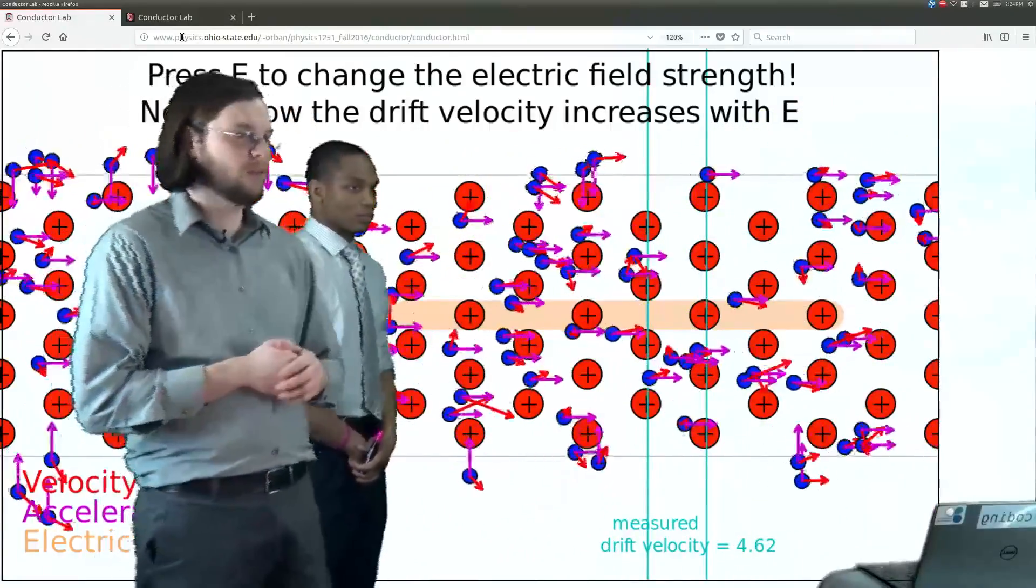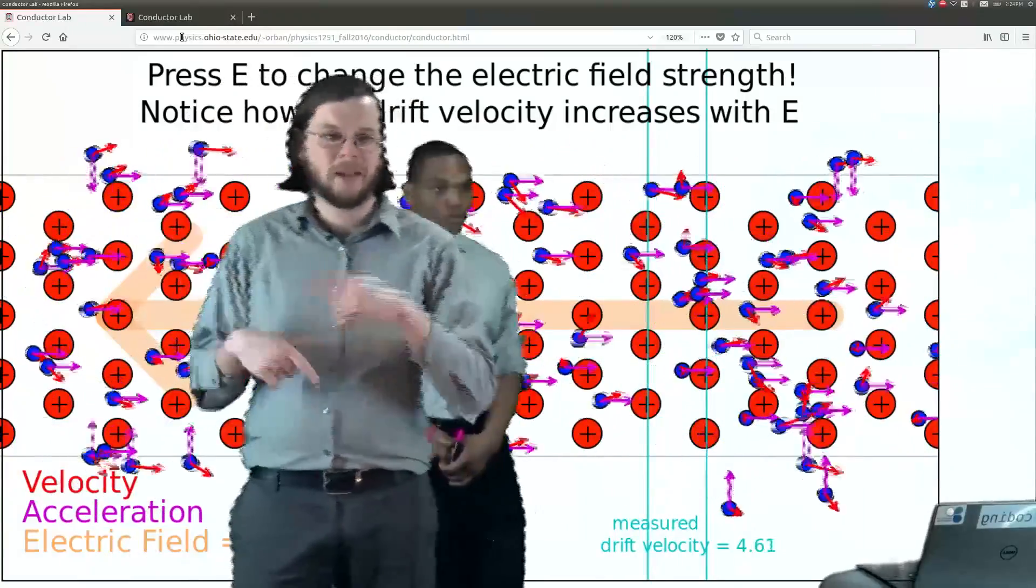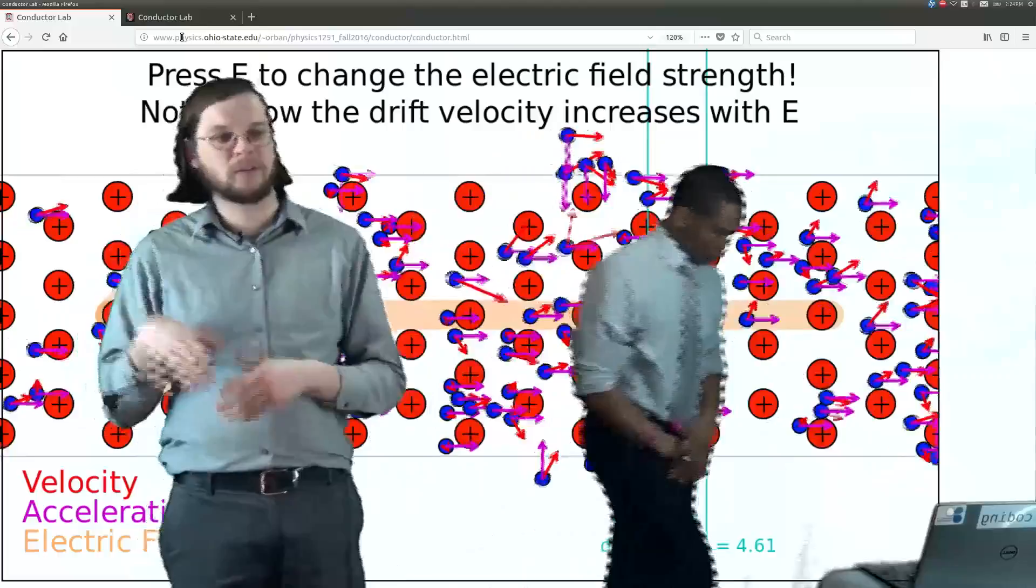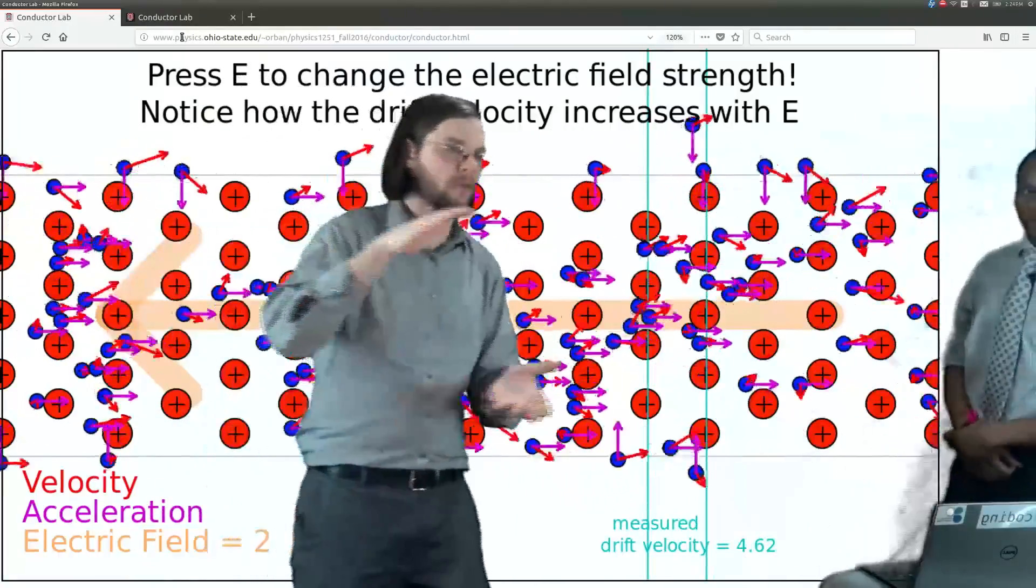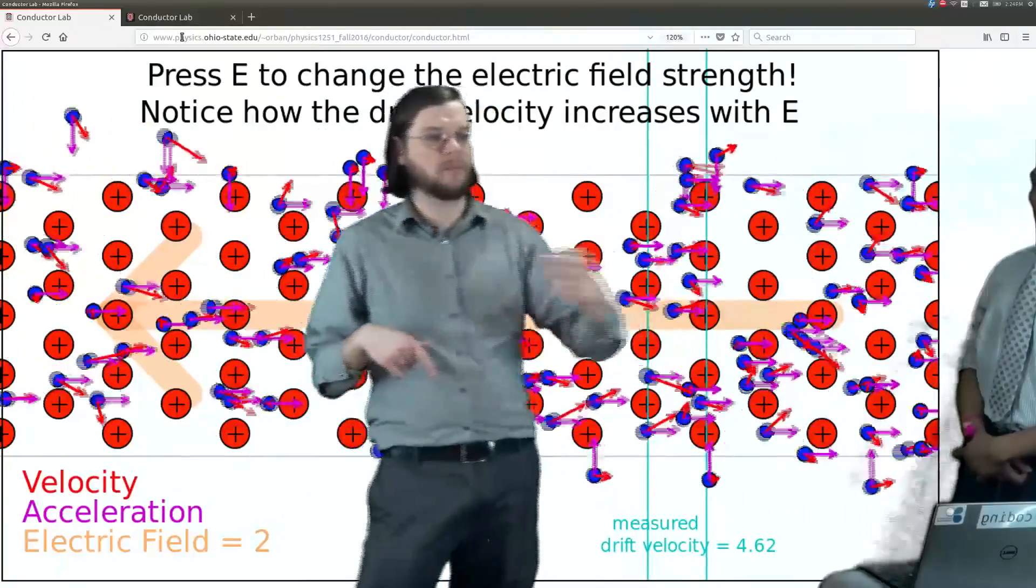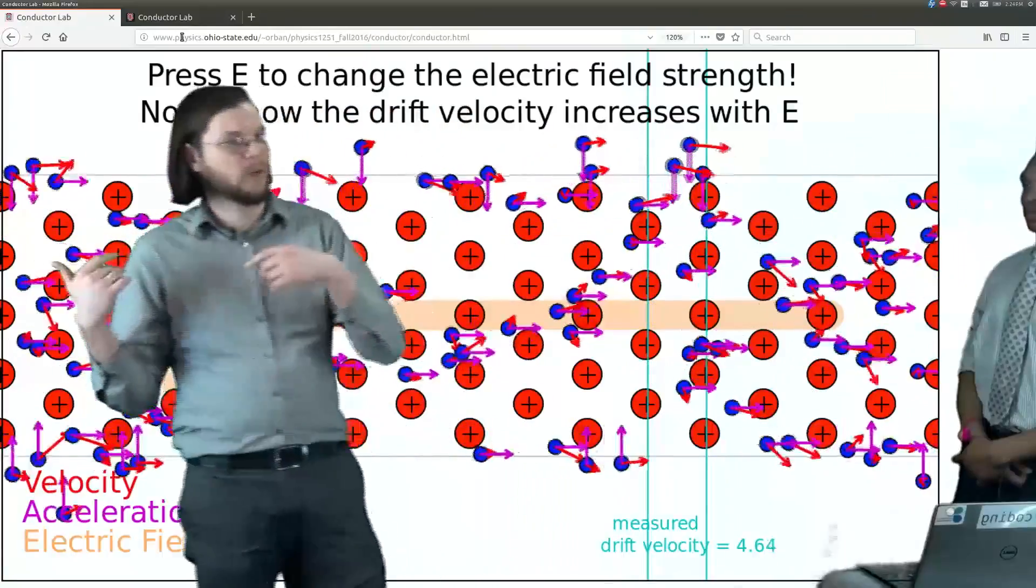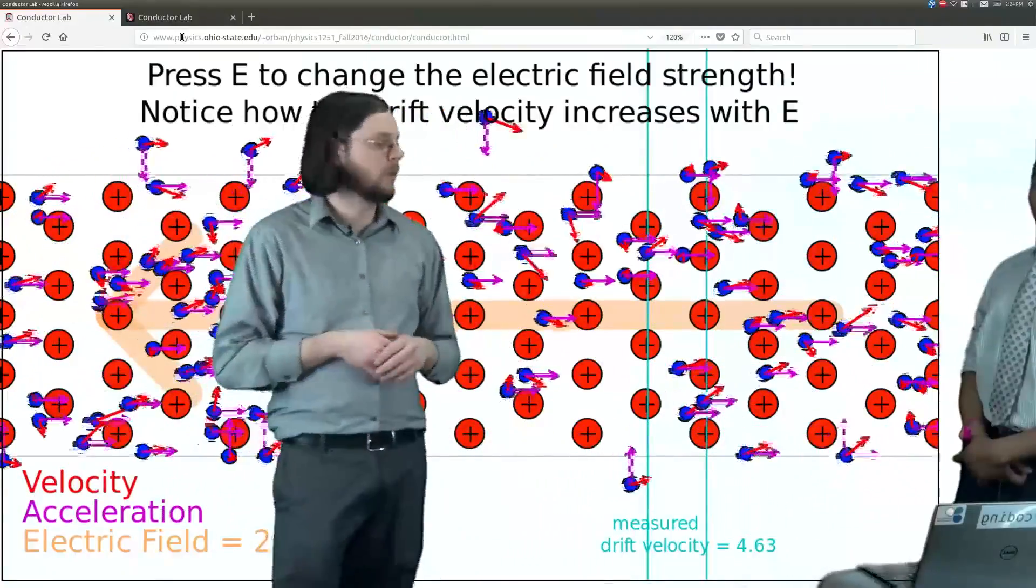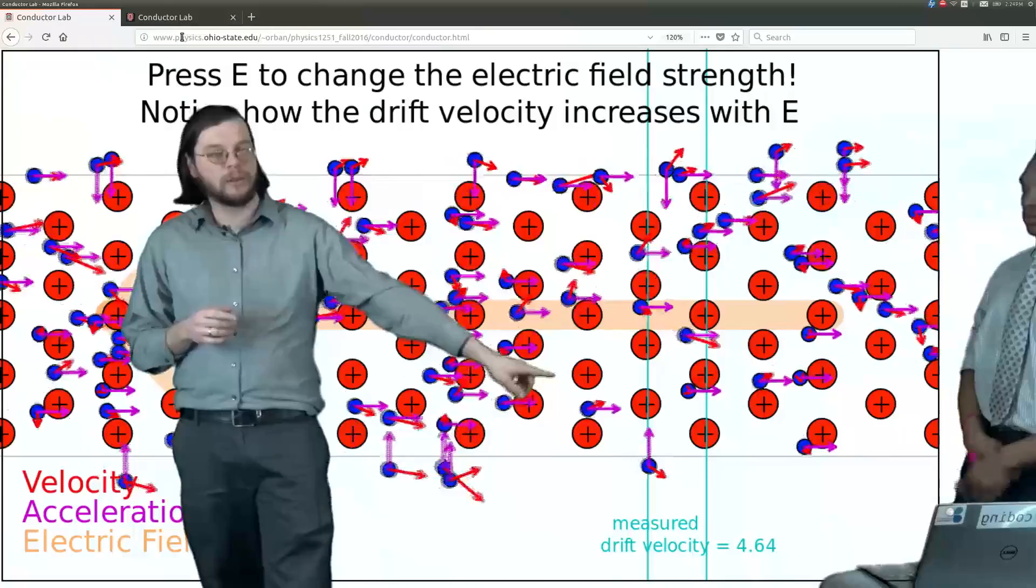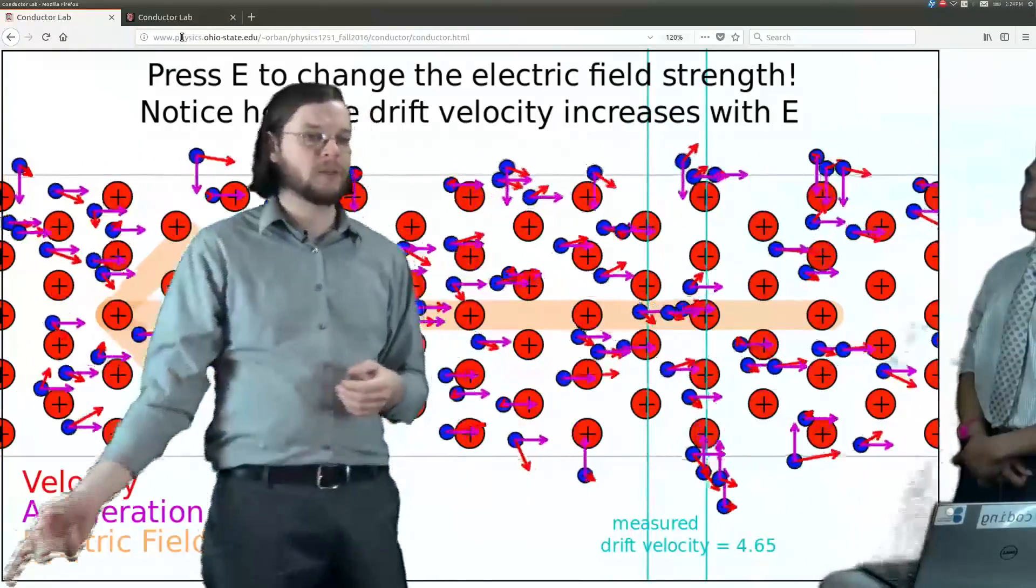So we're actually measuring the drift velocity here. Now, the drift velocity is not the actual speed of the electrons. It's sort of like the overall kind of average tendency for these things to go to the right. So, for example, if one electron sort of bounces back this way, that makes the drift velocity a little bit less because it's going the opposite way. That would be a negative velocity. So we're actually measuring that here, which is really cool because what we can do is we can increase the electric field.